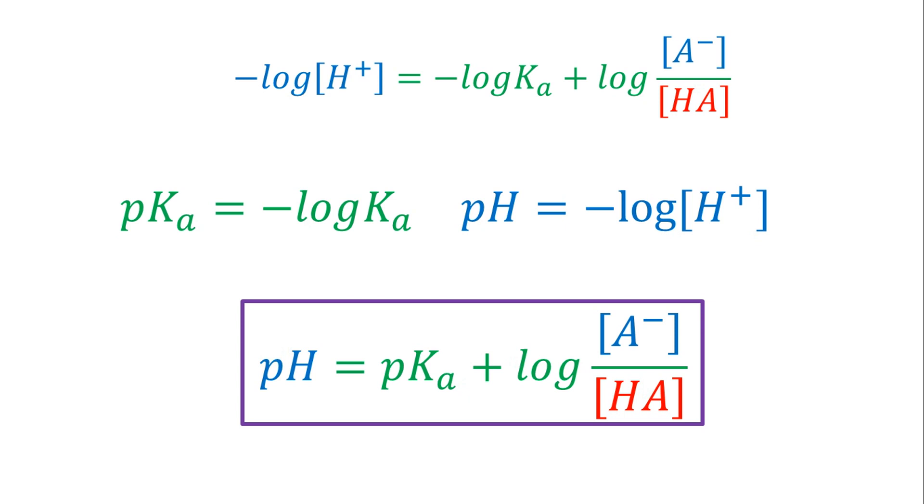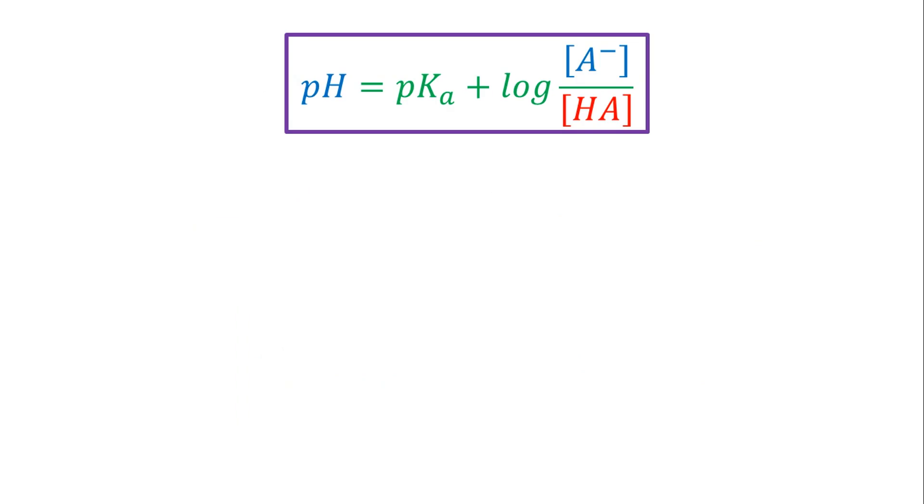So, in order to know the amounts of acetic acid and sodium acetate to make a buffer solution, pH 5, we only need to input the values in the formula. The pH we want is 5, and the pKa of acetic acid is 4.76. Then we solve for the ratio of acetate and acetic acid.